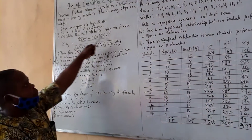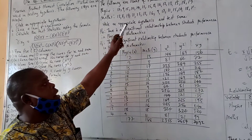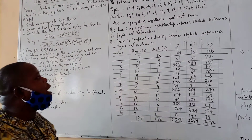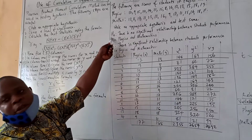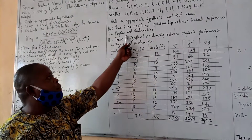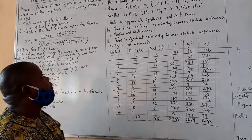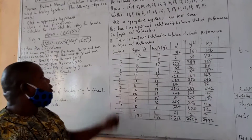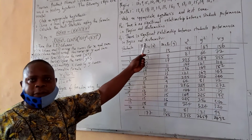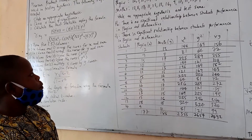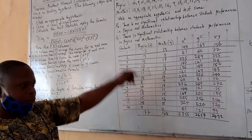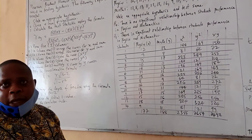We start with the first step, which requires us to state an appropriate hypothesis. We state the hypothesis in both null and alternate forms. The null hypothesis H₀: there is no significant relationship between students' performance in physics and mathematics. The alternate hypothesis: there is a significant relationship between students' performance in physics and mathematics. There are 14 students who were tested in both physics and mathematics.